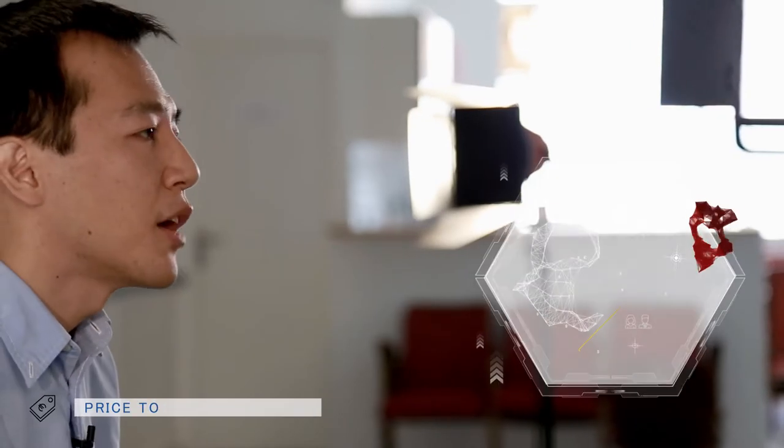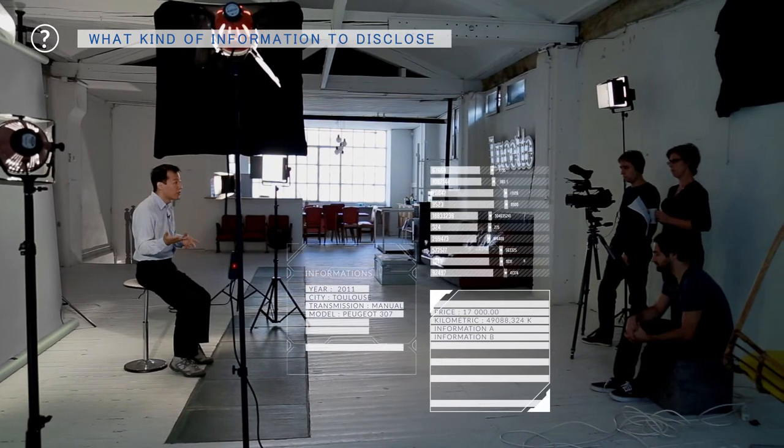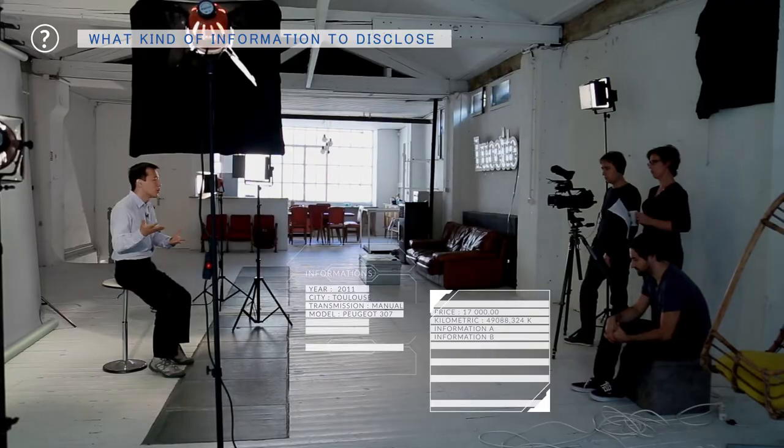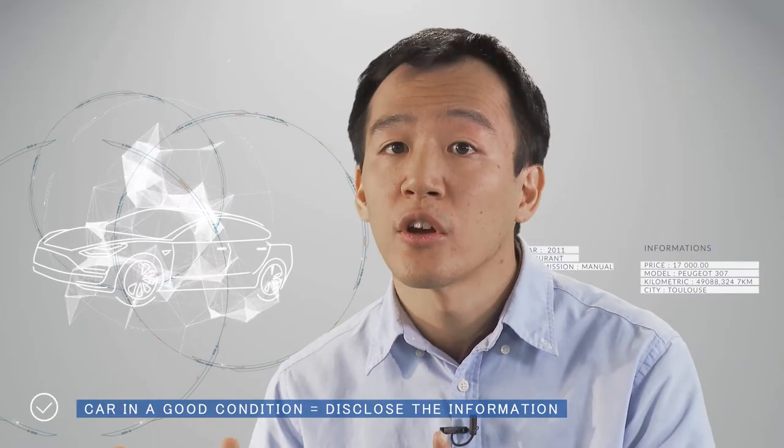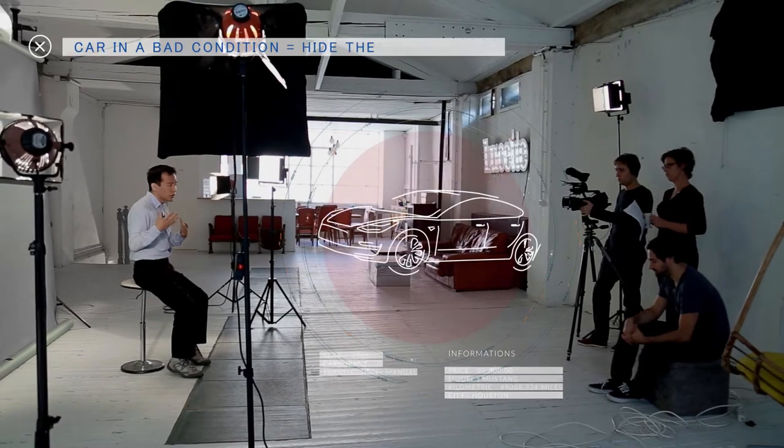Of course you want to make a high price so that you can get a lot of money, but at the same time there is a classical trade-off that if the price is too high, nobody wants to buy. But here there is another dimension of the problem: what kind of information and how much information to disclose. If the car is in good condition you may want to disclose this information, but if it's in bad condition you may want to hide it. You may want to systematically decide what kind of information to communicate with the consumer.